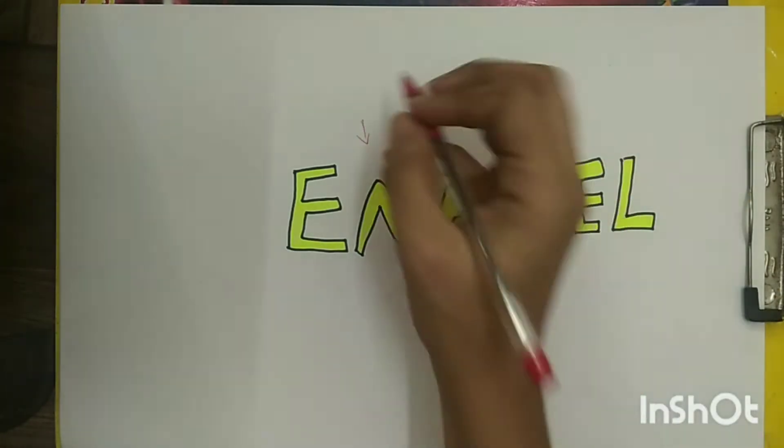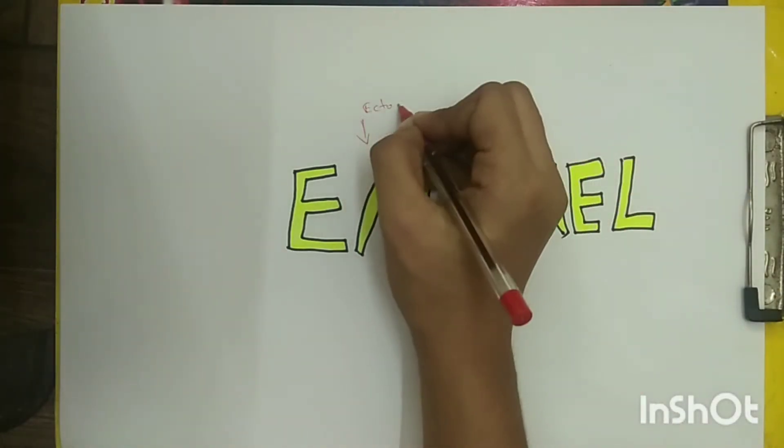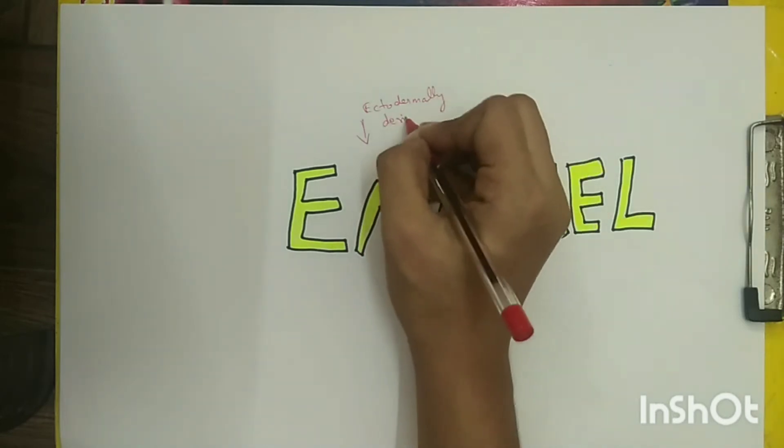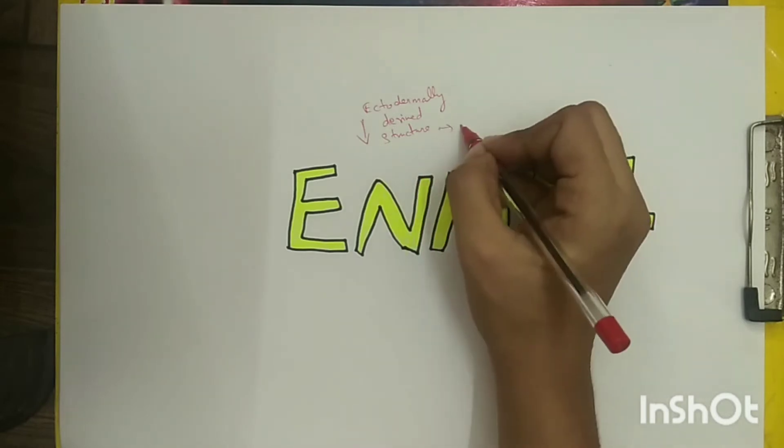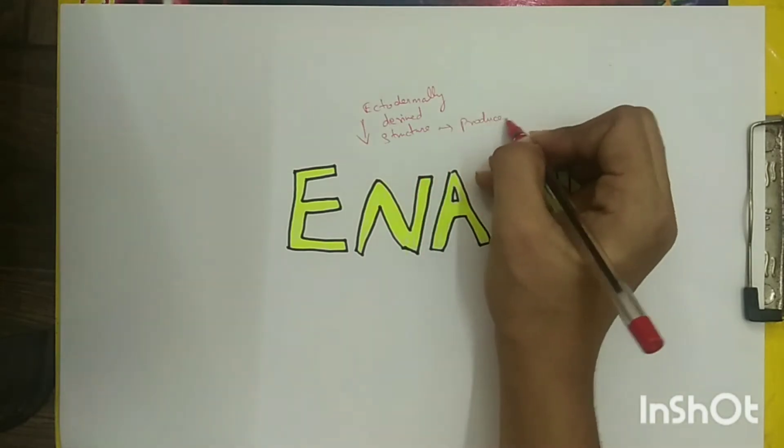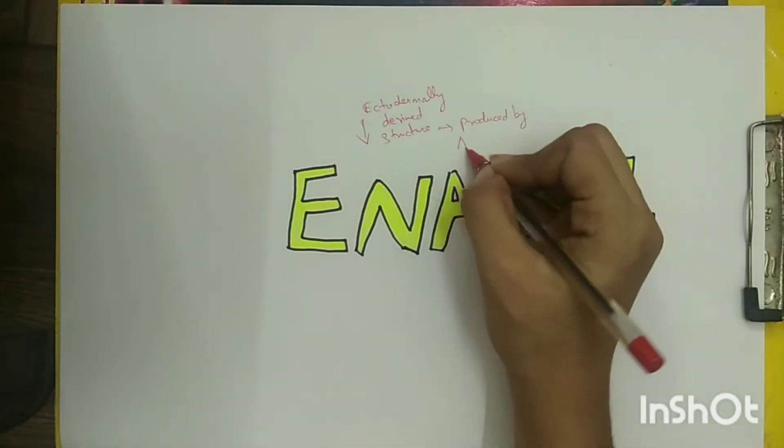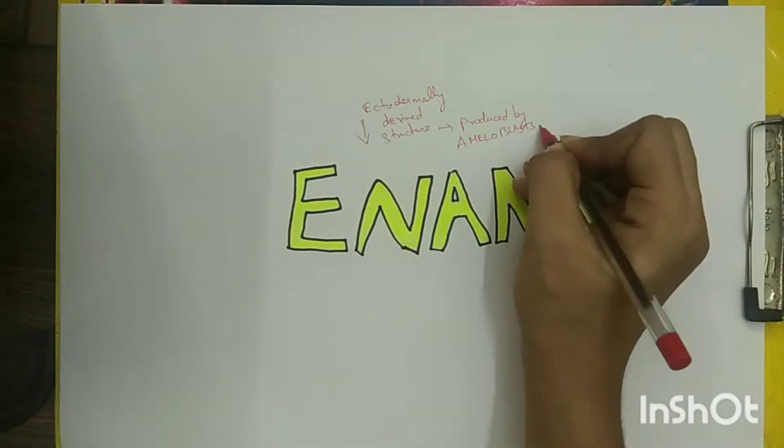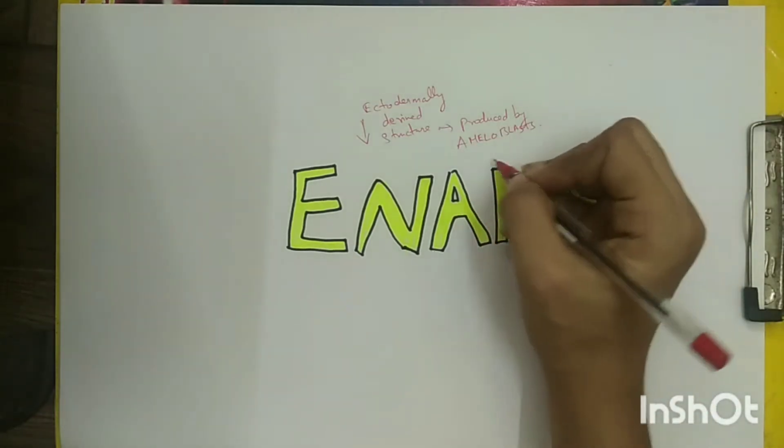Today we are going to see about enamel. We all know enamel is an ectodermal derived structure produced by ameloblasts, as discussed in our last video. Let us see the other structures and the physical and chemical properties of enamel as it follows.